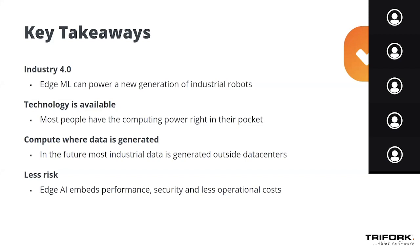To wrap up with some key takeaways: several companies have now embraced Industry 4.0. As shown today, logistics and manufacturing are an ideal place to implement machine learning in robots, and another interesting area is asset management. The technology is here and it's been commercialized — we can put this entire technology on your smartphone today. Keep your data processing at the site where it generates value; why move it when it's not necessary? This technology really emphasizes performance and security, and most often comes with a large reduction in operational costs.